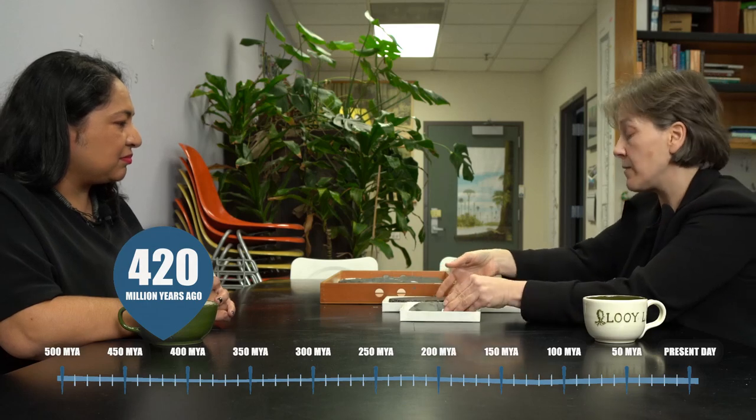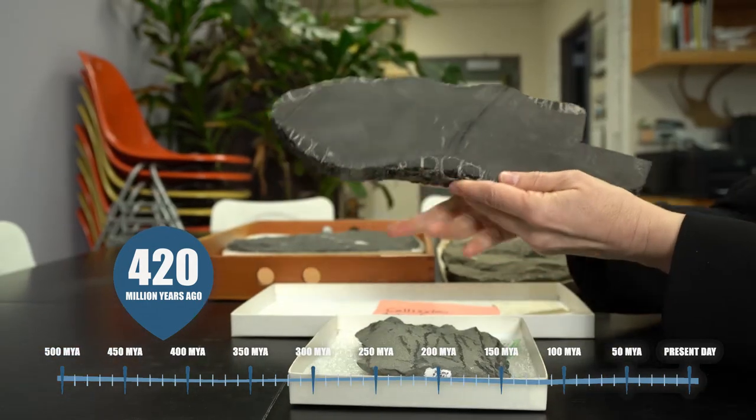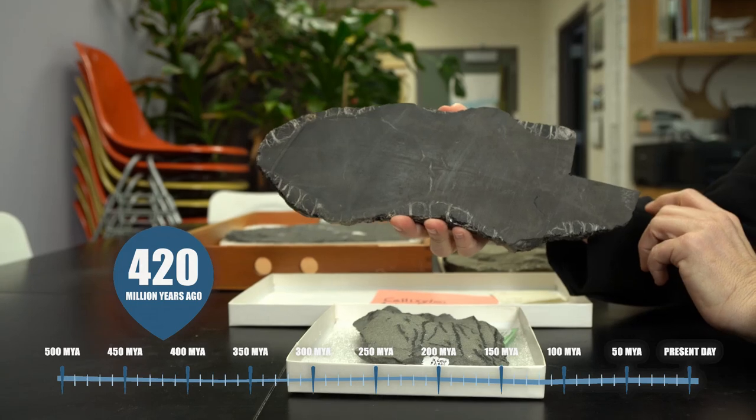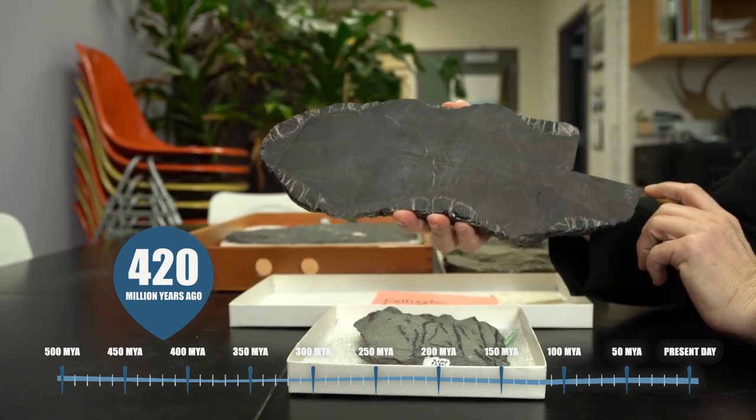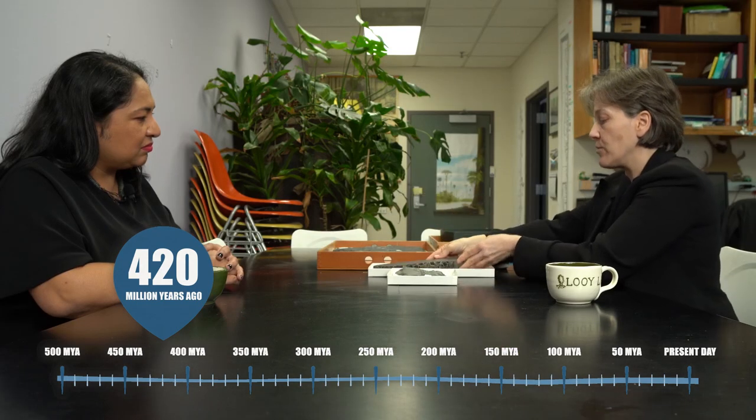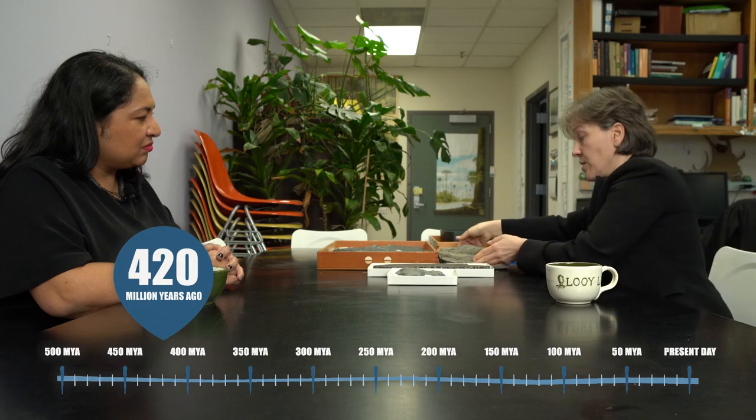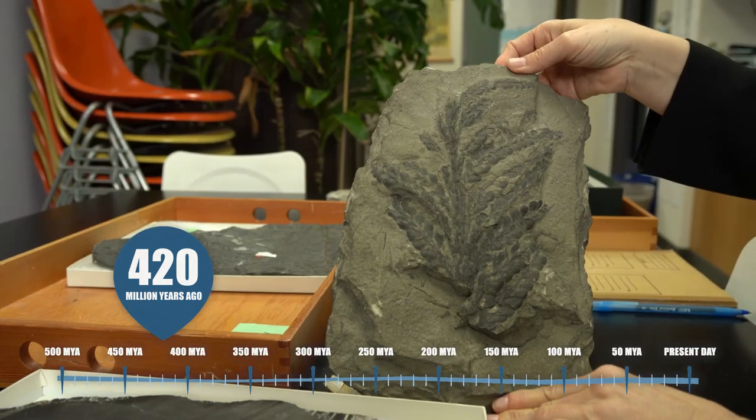Now compare that with this younger one. This is a stem as well. It's a cross section of its trunk actually. So this was a tree and we also have the branches that grow on it over here.